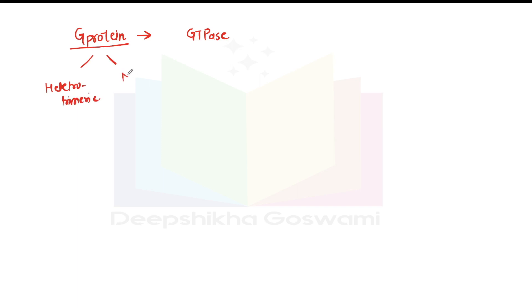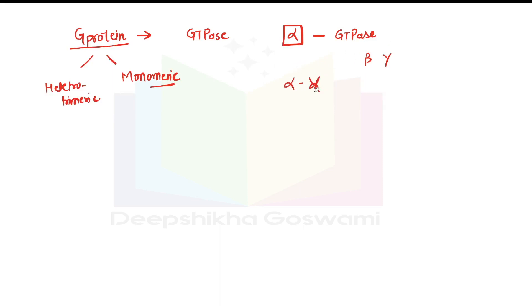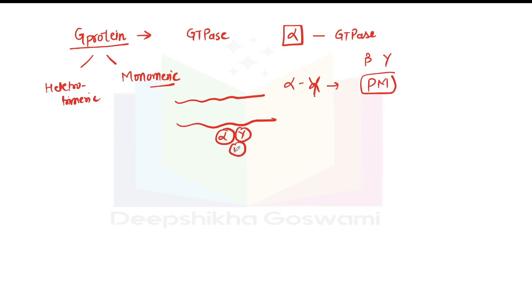Let's understand the G protein situation. G protein has two types: heterotrimeric and monomeric. The heterotrimeric G protein has an alpha subunit with GTPase activity, and beta and gamma subunits. The alpha and gamma subunits are associated with the plasma membrane. So if this is a plasma membrane and this is a G protein — alpha, gamma, and beta — alpha and gamma link to the plasma membrane.